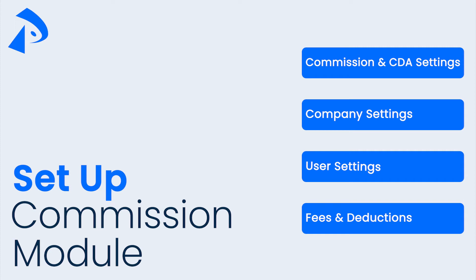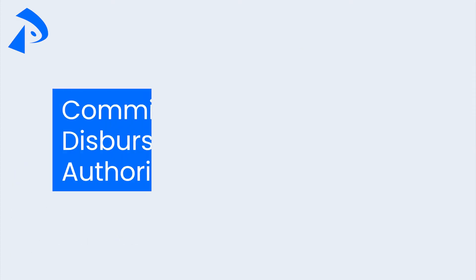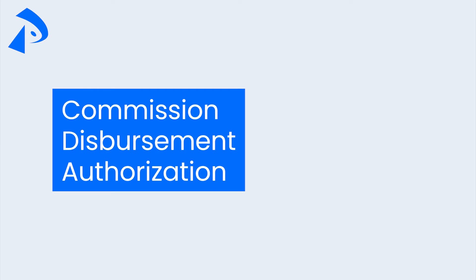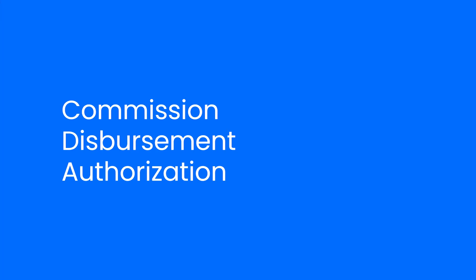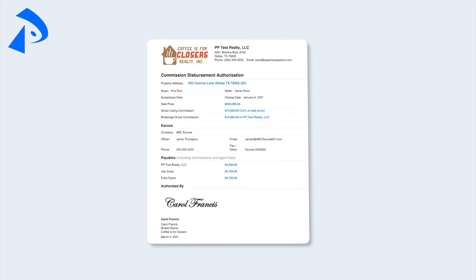One of the awesome features of the Commission Module is that the system will automatically generate a Commission Disbursement Authorization Form, sometimes called a Commission Demand Letter, when you manage commission on a transaction. Here's an example of what the Commission Disbursement looks like. This document basically instructs the title company, escrow, or closing attorney on how to disperse commission for a transaction.